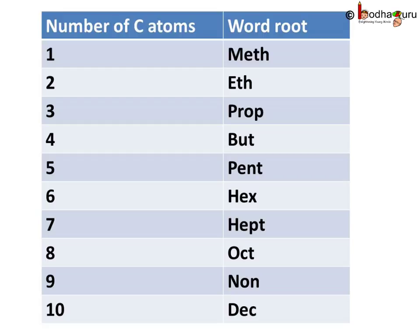For five carbon atoms, the root is 'pent'; for six, it is 'hex'; for seven, 'hept'; for eight, it is 'oct'; for nine, it is 'non'; and for ten, it is 'dec'.